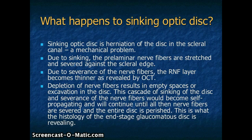This cascade of sinking of the disc and severing of the nerve fibers will become self-propagated until all the nerve fibers are severed. This may be the reason that glaucoma cannot be halted. At the end stage, the entire disc is perished. This is what the histology of the end-stage glaucomatous disc reveals — an empty crater.